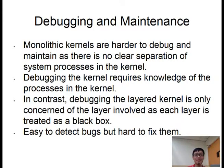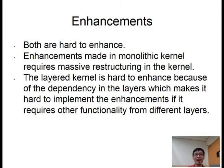As for debugging and maintenance, monolithic kernels are harder to debug and maintain as there is no separation of system processes in the kernel. Debugging the kernel requires knowledge of all processes in the monolithic kernel. In contrast, debugging in the layered kernel is only concerned with the layer involved, since each layer is treated as a black box. However, it still takes time to fix because you have to start from the lowest layer, which is hardware, and go all the way up. Lastly, enhancements: both are hard to enhance. Enhancements in a monolithic kernel require massive restructuring, while the layered kernel is hard to enhance due to dependencies between layers, which makes it difficult to implement extra functionality that requires features from different layers.